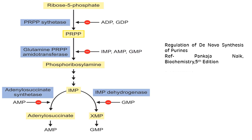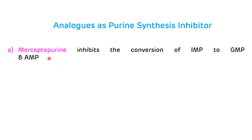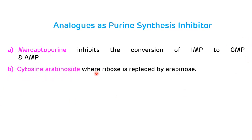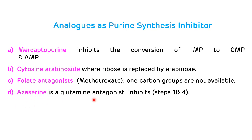Analogues as purine synthesis inhibitors, used as anticancer agents: First is mercaptopurine, which inhibits the conversion of IMP to GMP and AMP. Second is cytosine arabinoside, where ribose is replaced by arabinose. Third is folate antagonists like methotrexate, which inhibit the transfer of one-carbon groups, blocking synthesis of C2 and C8 of the purine ring. Fourth is azaserine, a glutamine antagonist, which inhibits steps one and four, blocking synthesis of N3 and N9.